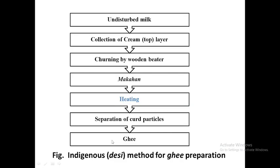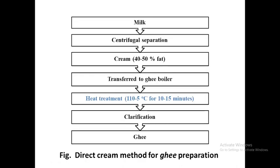There are four different methods of ghee preparation. The first is the indigenous or desi method, which is used at the domestic scale. Companies generally avoid this method because it is very time consuming, though ghee prepared using this method has a very good, well-liked flavor. The other three — direct cream, creamery butter, and pre-stratification — are used at the commercial scale. Among these, creamery butter and pre-stratification are the most commonly used.